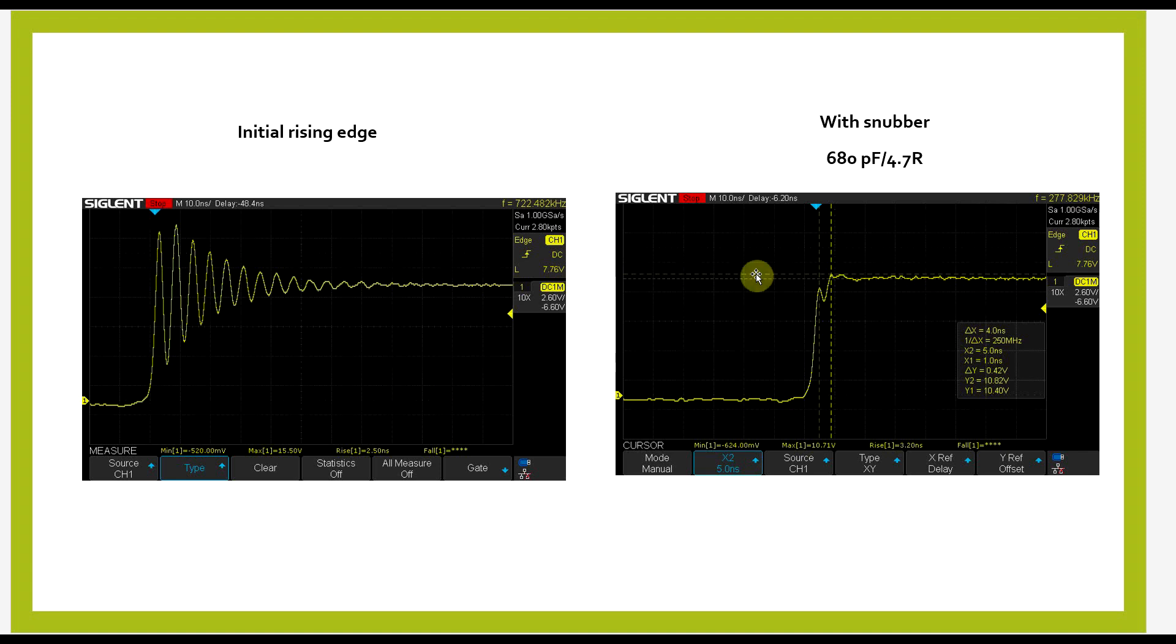If we zoom in, with the snubber circuit, we have a very decent 3.2 nanosecond rise time compared to the 2.5 nanoseconds we had before, and we still have a tiny little oscillation appearing. But it's nothing like the initial circuit.